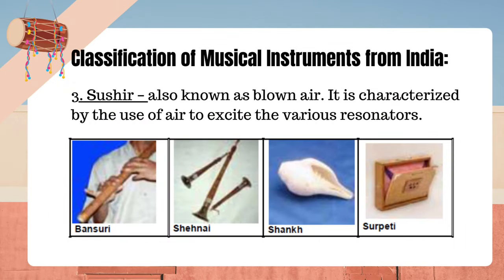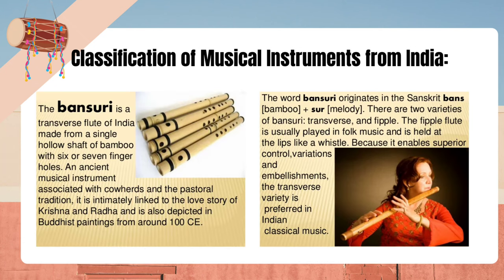Sushir, also known as blown air instruments, is characterized by the use of air to excite the various resonators. The Bansuri is a transverse flute of India made from a single hollow shaft of bamboo with six or seven finger holes. It is an ancient musical instrument associated with cowherds and the pastoral tradition, intimately linked to the love story of Krishna and Radha, and also depicted in Buddhist paintings from around 100 CE. The word Bansuri originates from the Sanskrit bans (bamboo) plus suri (melody). There are two varieties of Bansuri: transverse and fipple. The fipple flute is played in folk music held at the lips like a whistle, while the transverse variety is preferred in Indian classical music for its superior control, variations and embellishments.